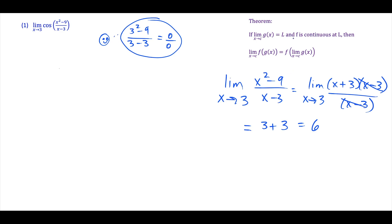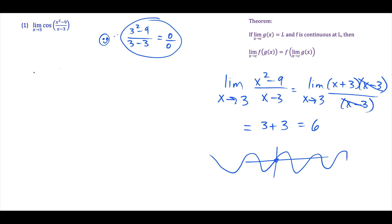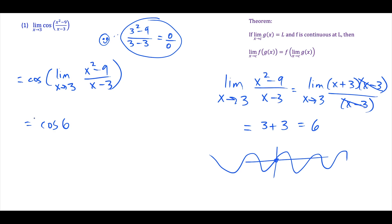So the value of L, our limit, is equal to 6. The outside function cosine is continuous at 6 — in fact, cosine is continuous for all values of x, completing its wave over and over. So the conditions are met. This tells us the limit equals cosine of the limit as x approaches 3 of (x² − 9)/(x − 3), and since that inside limit equals 6, our final answer is cosine(6).